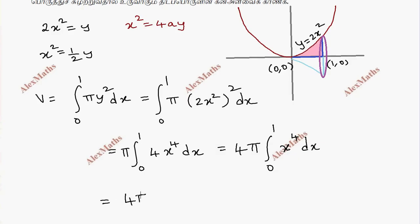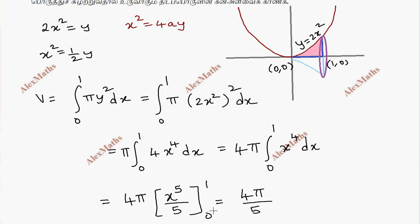Integrating, π y² equals x⁵ divided by 5, evaluated from 0 to 1. The total answer is 4π/5 cubic units.